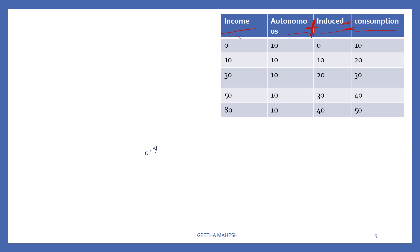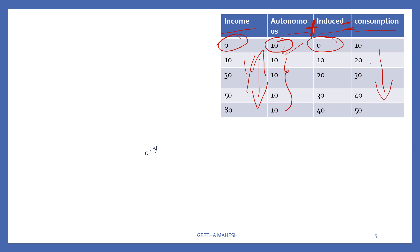When income is zero, induced consumption is also zero. Autonomous consumption is fixed and constant. If you want to survive, you need basic things like food, shelter, and minimum clothing. As income increases, consumption also increases, but autonomous consumption remains constant while induced consumption increases.